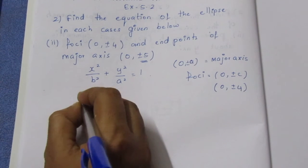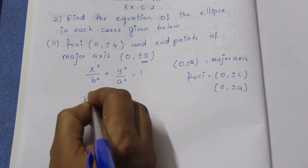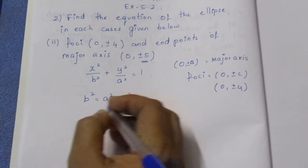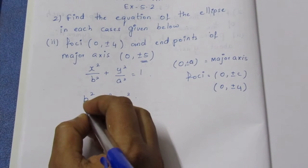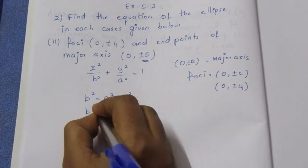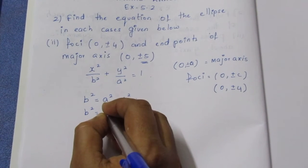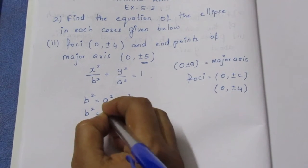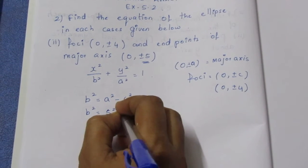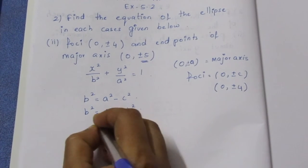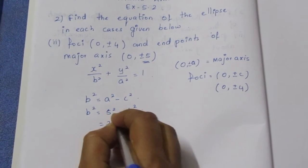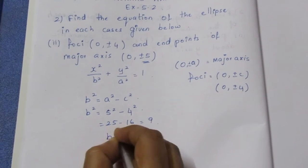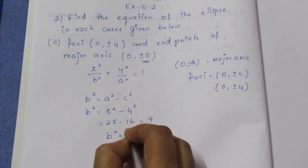b² is equal to a² minus c². That is 5² minus 4², which gives 25 minus 16. Therefore b² is equal to 9.